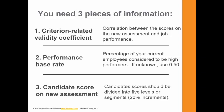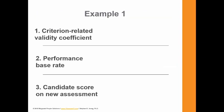The third piece of information is the candidate's score on the new assessment. The candidate's score should be divided into five levels. So if you have ten candidates, you divide them into five different segments — two at the very top, two in the second, two in the third tier, and so on. Let's go through a quick example.